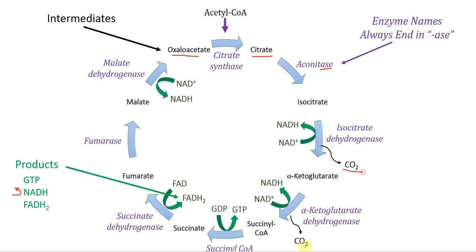Carbon dioxide is also a product of the cycle, but it's not used to make energy — it's essentially a waste product, and we just breathe it out. The products we're most concerned about regarding how the citric acid cycle is central to aerobic metabolism are the NADH and FADH2. These are electron carriers — in the citric acid cycle, the NADH and FADH2 pick up high energy electrons to carry them to the electron transport chain.